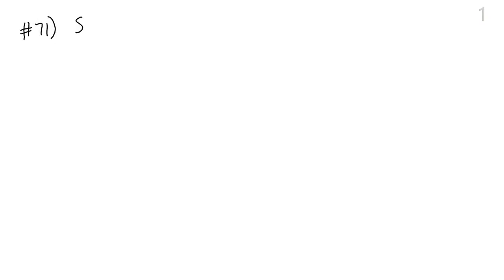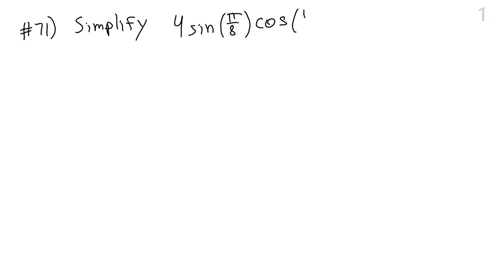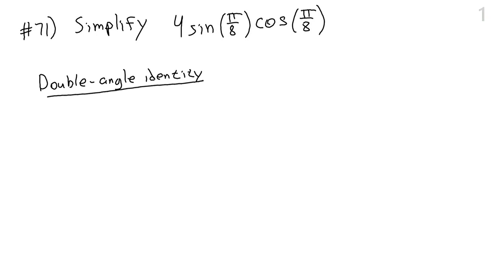The next question is number 71. It asks us to simplify four times sine of pi over eight times cosine of pi over eight. We're not told which identity to use, but the most useful is the sine double angle identity, because we have sine of an angle times cosine of the very same angle. The identity is: sine of 2x equals two times sine x times cosine x.